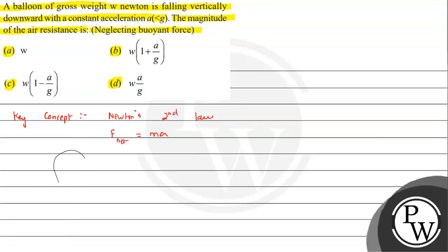So here let's suppose we have a balloon. Its gross weight w. So weight w will be acting in the downward direction. It's falling with acceleration a.